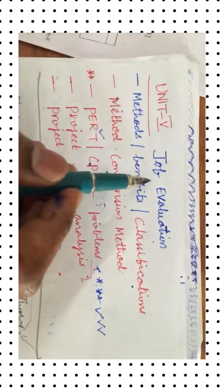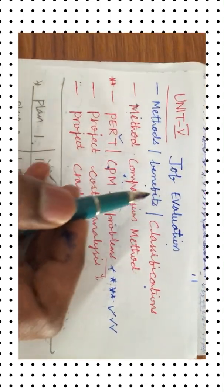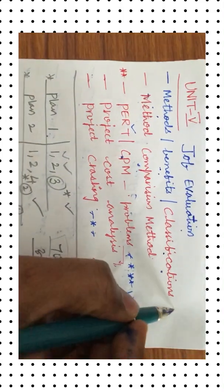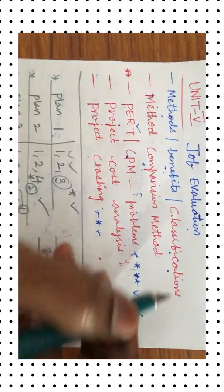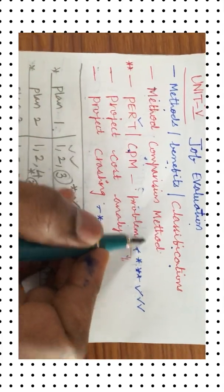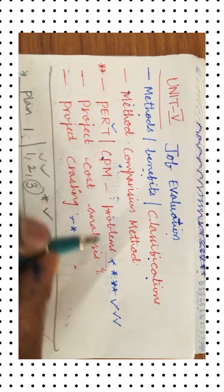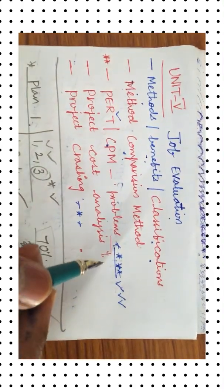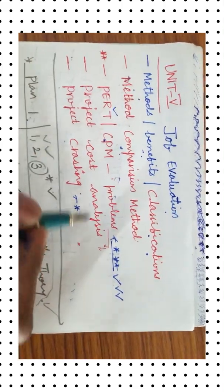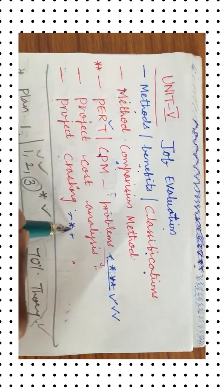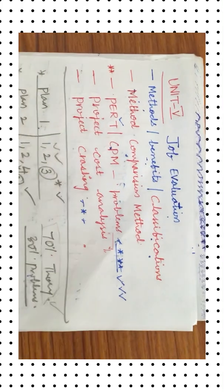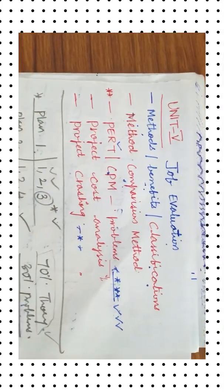The last unit, Unit 5, is all about job evaluation — methods, benefits, and classifications may appear as a 5-mark question, or a method comparison question. You will also be getting PERT and CPM differences and related problems, which is a very important question. Project cost analysis and project crashing problems are also covered. The PERT and CPM problem from Unit 5 is a 100 percent sure question in this year's question paper pattern.